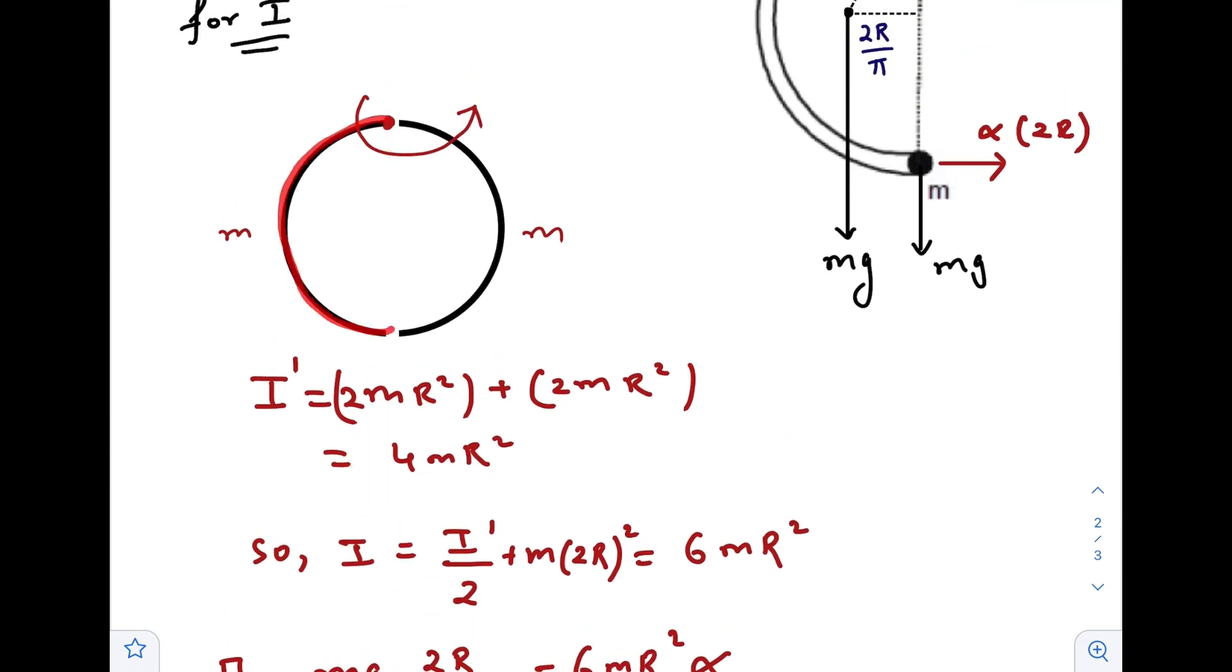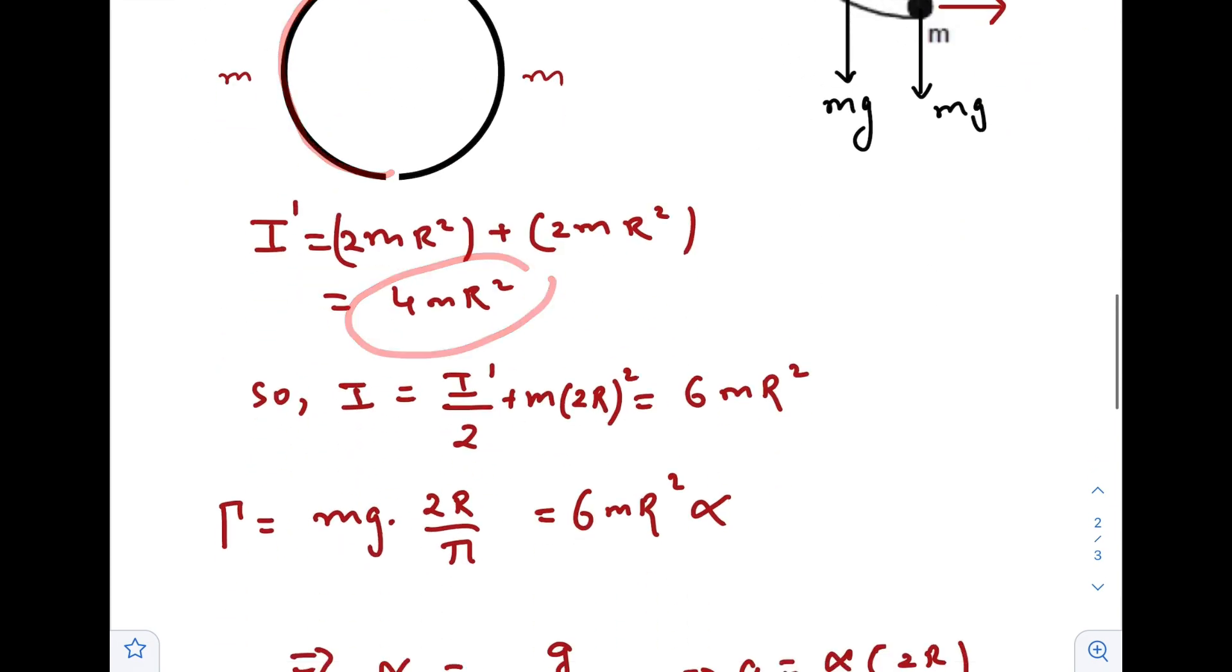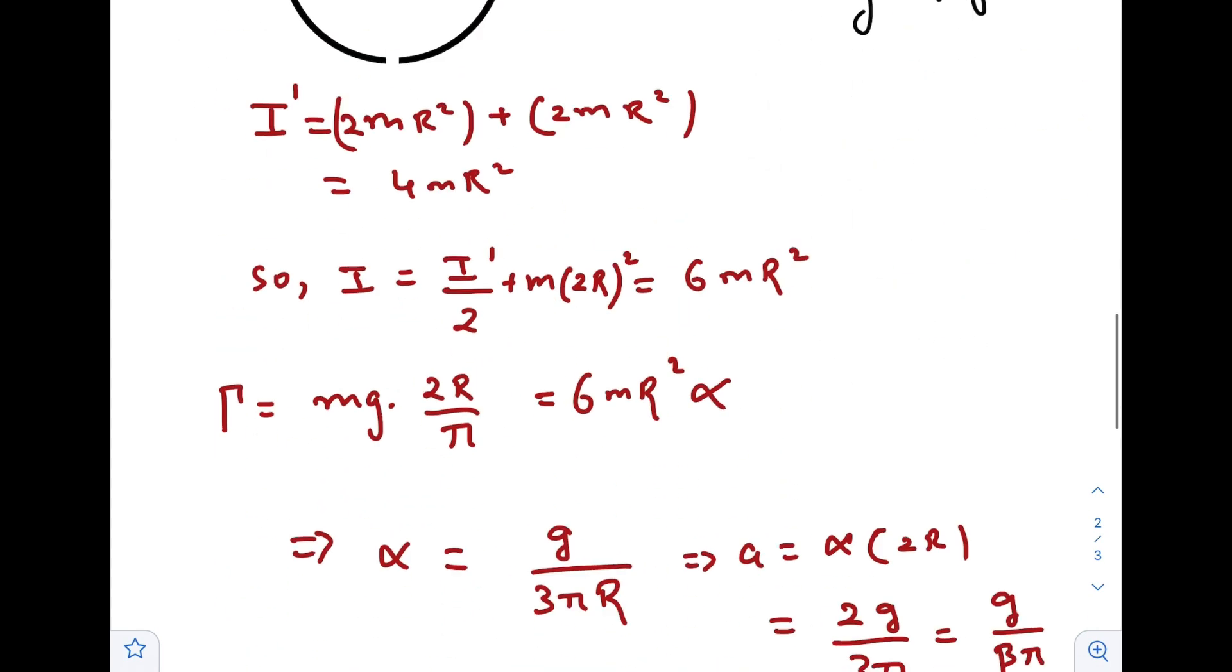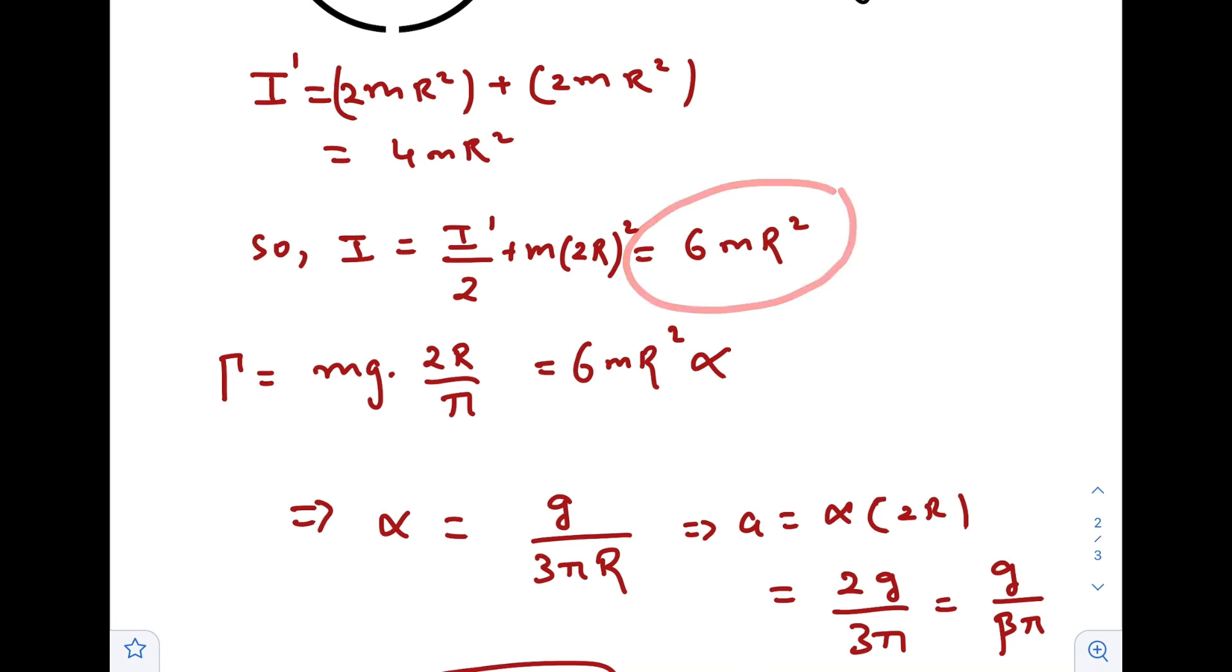So the final moment of inertia of this semicircular ring would be half of this one. For the whole structure it would be I prime divided by 2 plus m times 2R squared. This is the moment of inertia of the whole structure along with the point mass.